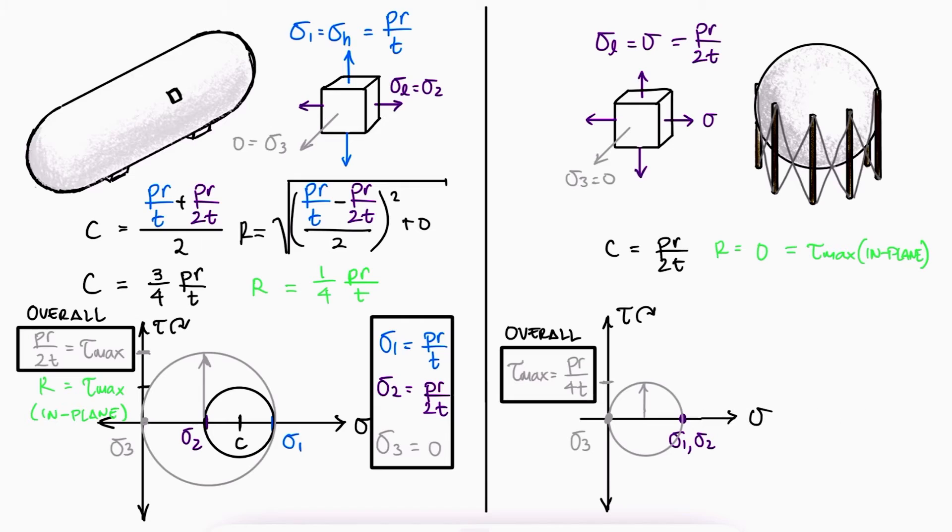The principal stresses would be two stresses of pr over 2t, and one stress of zero. These expressions will always be the same, but it's almost not worth using them as an equation to just substitute variables in. The Mohr's circle process is so simple that it's better to understand what you're finding than memorizing additional expressions to find the results you're looking for.